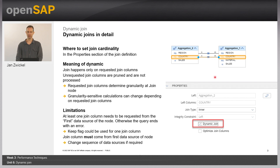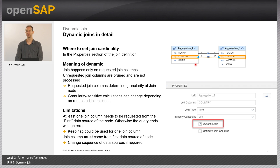Why is that so? Because of the meaning of the dynamic join setting. The meaning is that the requested columns of the join determine the granularity at this join node. So let's say you have two columns — region and country — and you request only one in the query. Then, even though the join is executed, you still only have that single column processed, and the other column of the join is ignored because you are not requesting it.